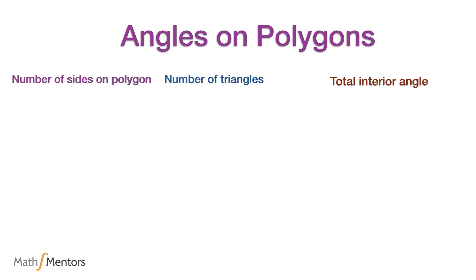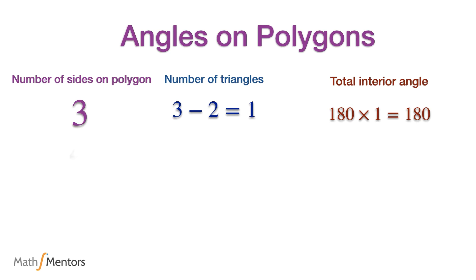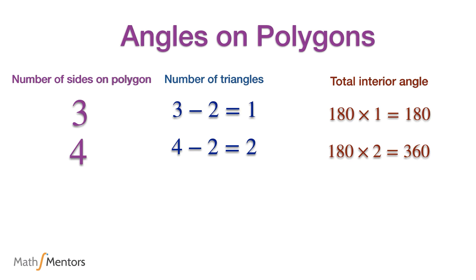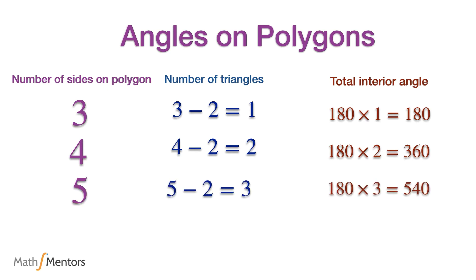Let's now summarize what we've found. When a polygon is made from three sides, we can make one triangle — that is two less than the number of sides — and the total interior angles are 180 degrees. With four sides we make two triangles, again two less than the number of sides, giving 180 × 2 = 360 degrees. With five sides we make three triangles, again two less than the number of sides, giving 180 × 3 = 540 degrees.